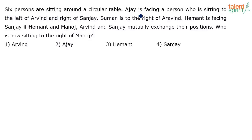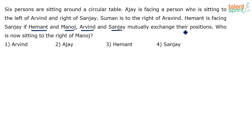Six persons are sitting around a circular table. Ajay is facing a person who is sitting to the left of Arvind and right of Sanjay. Suman is to the right of Arvind. Hemant is facing Sanjay. If Hemant and Manoj, and Arvind and Sanjay mutually exchange their positions, who is now sitting to the right of Manoj? This is not like any other circular arrangement — we need to understand the mutual exchange properly and complete the arrangement first.